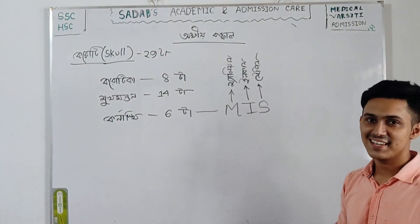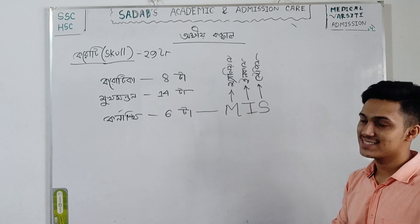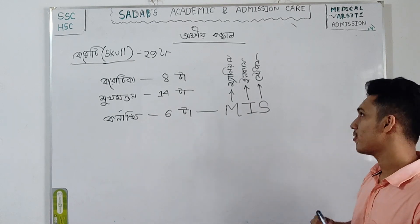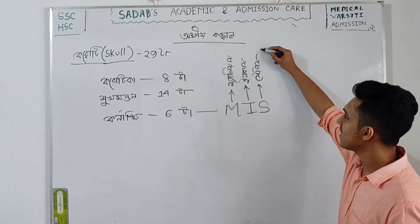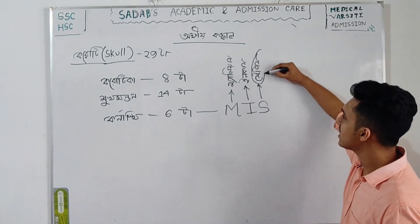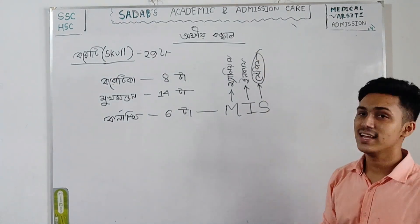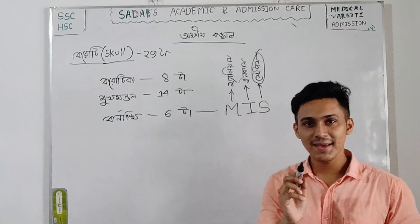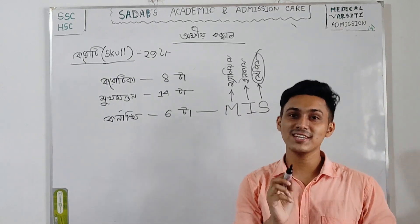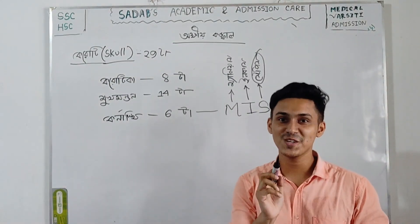The ear ossicles are: malleus, incus, and stapes. Stapes — stapes have support from all people.